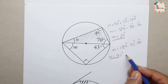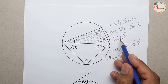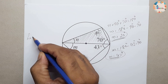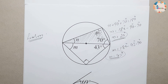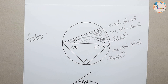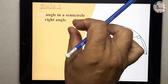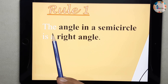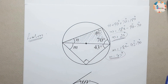If the question asks for just the angle, stating the value is sufficient. But if they also ask for a reason or justification — which carries separate marks — you will have to mention the rule: the angle in a semicircle is a right angle.